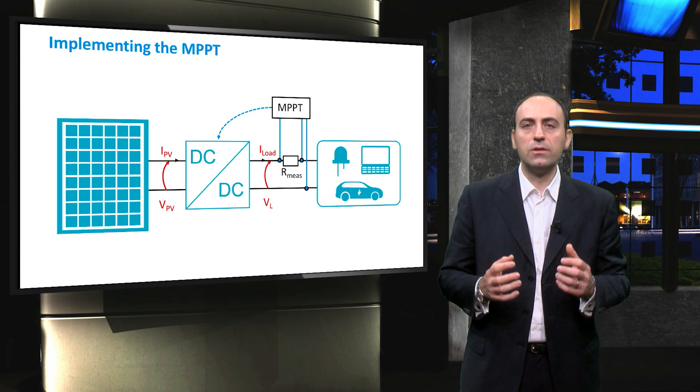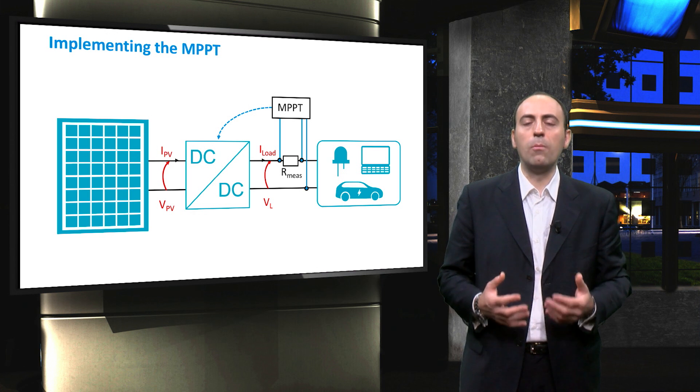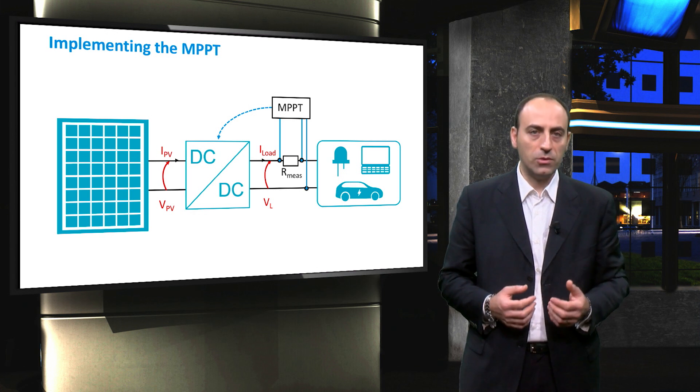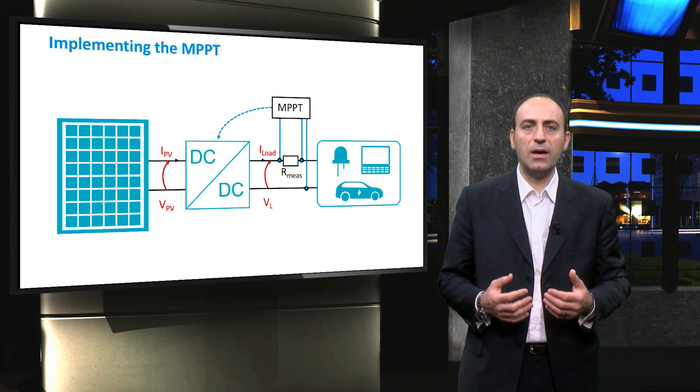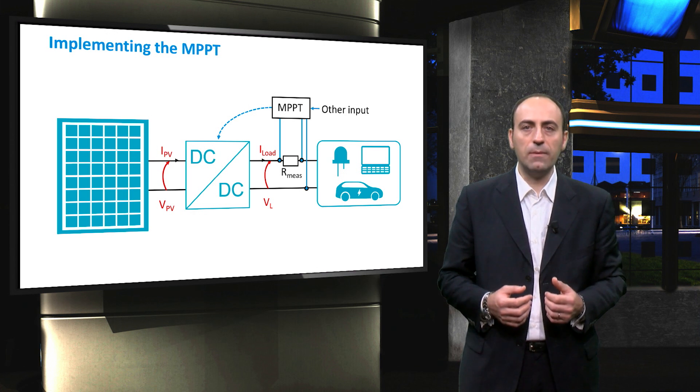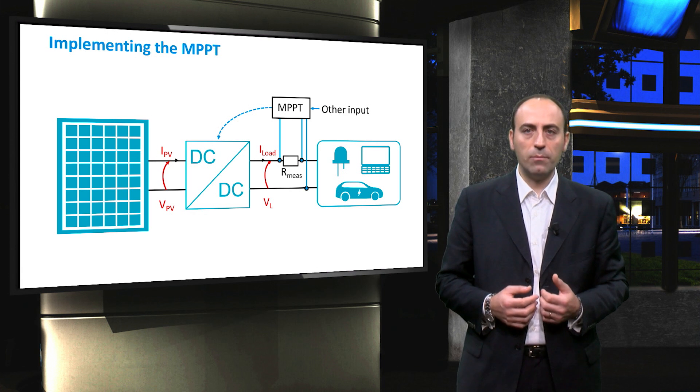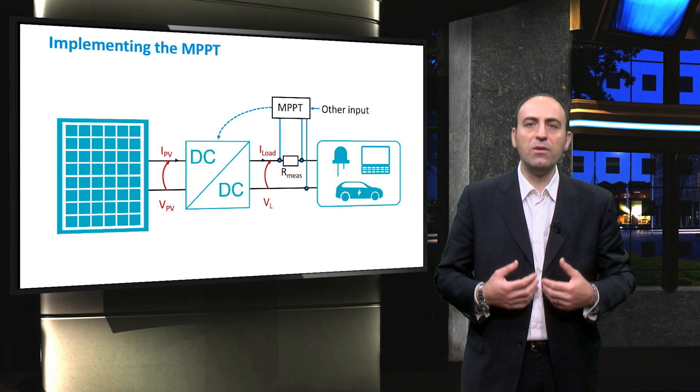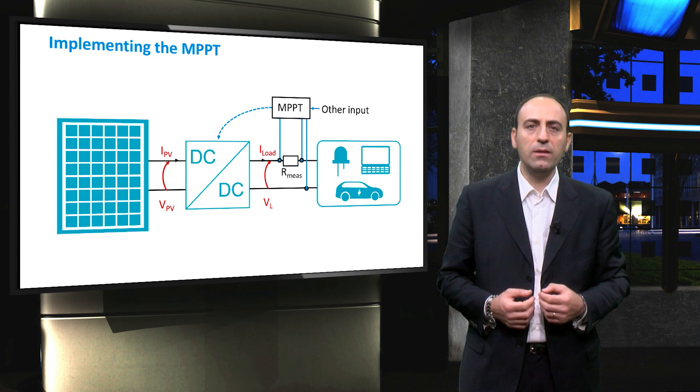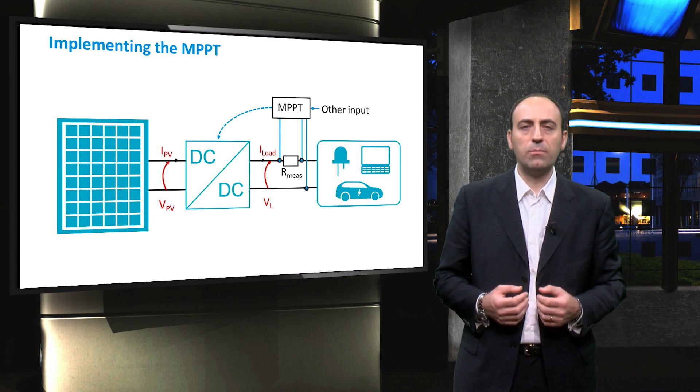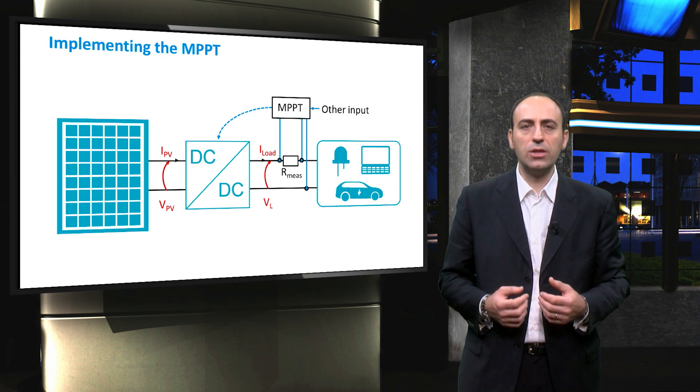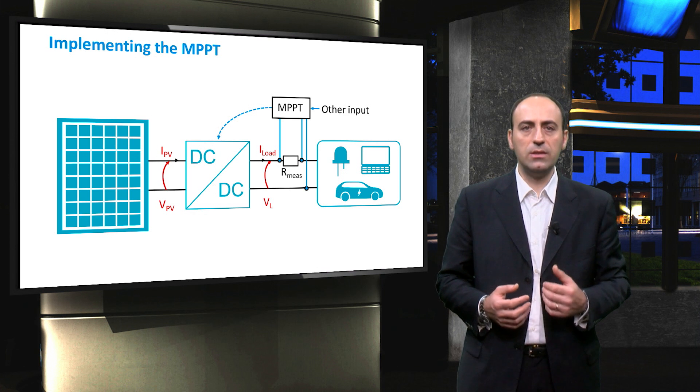Of course, the topology can be made more complex depending on the maximum power point tracking algorithm, and some other information that might be provided to the MPPT, for example the temperature of the PV module and the outcome before the load. In this way, the PV power is maximized by measuring the current and voltage and simultaneously varying the DC-DC voltages.